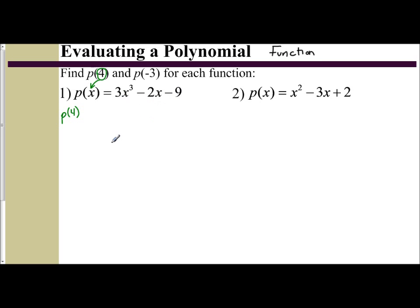And then perform your order of operations to evaluate it. So you have 3 times, instead of x cubed, I'm going to put 4 cubed, minus 2 times 4, minus 9. So now, we ignore this left side of the equation. This is just telling me I'm evaluating the function P at x = 4. So we just work on this right side doing order of operations.